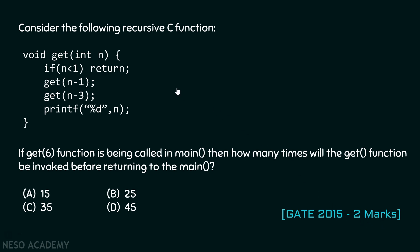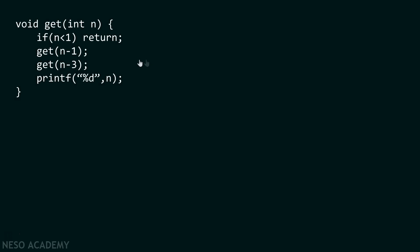Let's dive into the solution. We assume there is a main function and inside it we call get(6), passing argument six to variable n. Therefore, initially the value of n will be six, and execution starts from get(6). As n equals six and six is not less than one, this condition is not satisfied, so we call get(5) because six minus one is five, and control transfers from get(6) to get(5).